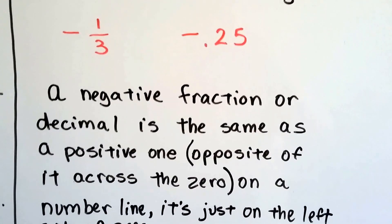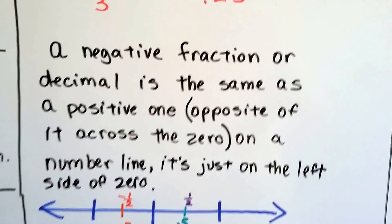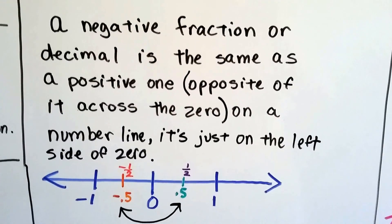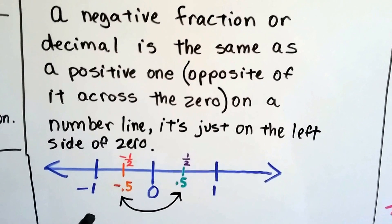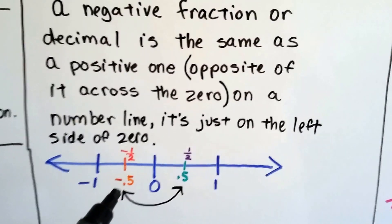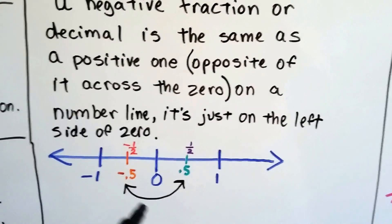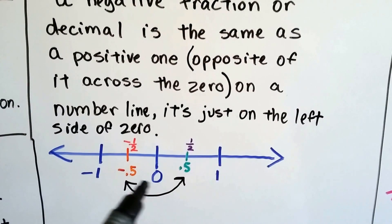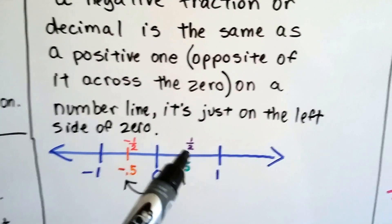A negative fraction or decimal is the same as a positive one, opposite across the zero, on a number line. It's just on the left side of zero. So here's negative 0.5, here's positive 0.5. Here's negative half, here's positive half.